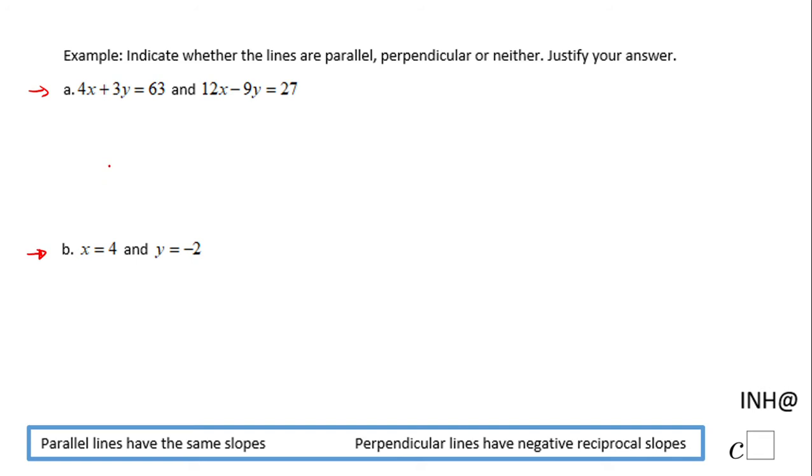How are we going to find that? We're going to have to find the slope of each line and see if they are the same slopes, then we have parallel lines. If they are negative reciprocal, then they are perpendicular. If the slopes are not the same and they are not negative reciprocal, then we have the last choice which is neither.